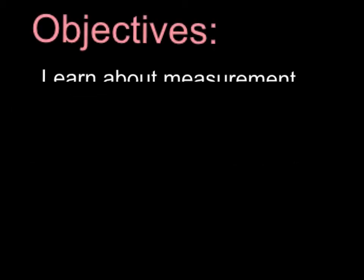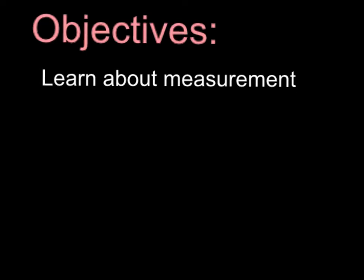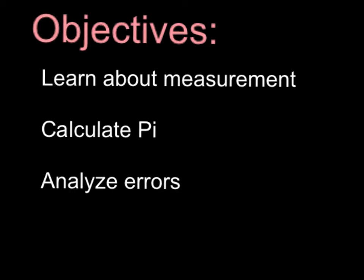Our objectives for this lab are to learn about measurement, what it takes to measure something, and how accurately we can measure something. Then we are going to calculate pi using various objects that I've provided in lab. And then we're going to analyze the error. How certain are we that we're getting the correct answer, and does the actual value fall within our measurements?